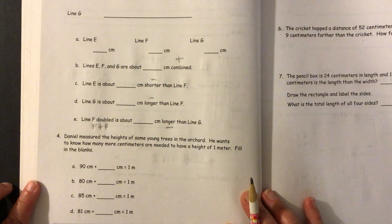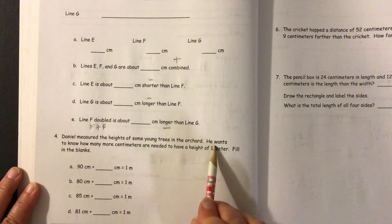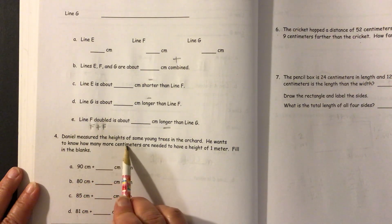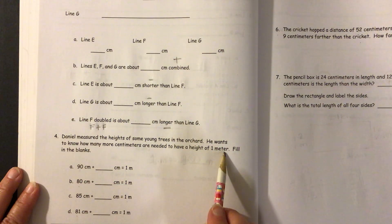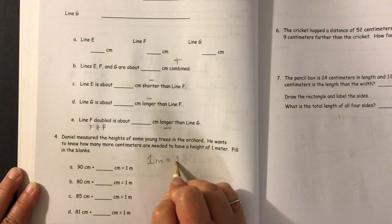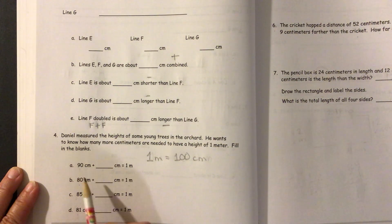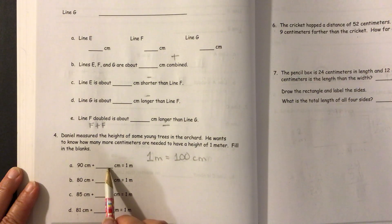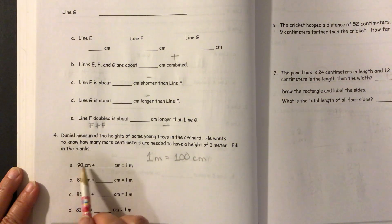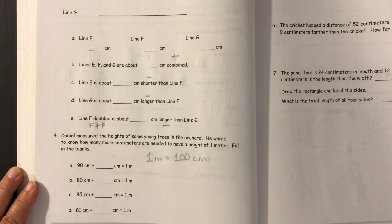So on the bottom here, we have Daniel measured the heights of some young trees in the orchard. He wants to know how many more centimeters are needed to have a height of one meter. Fill in the blanks. So it's really important for you to know that one meter is equal to 100 centimeters because we're using centimeters here. So how many more centimeters are going to be needed to get from 90 to 100, or 80 to 100, or 85 to 100, 81 to 100. We did something like this in module one.